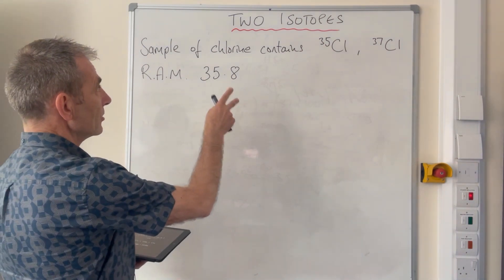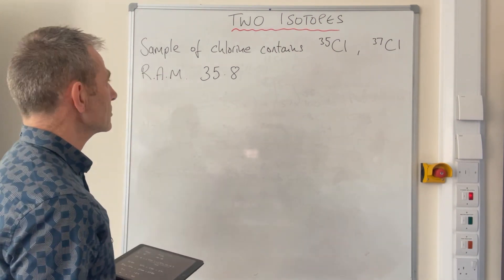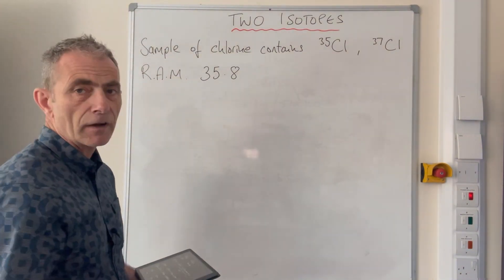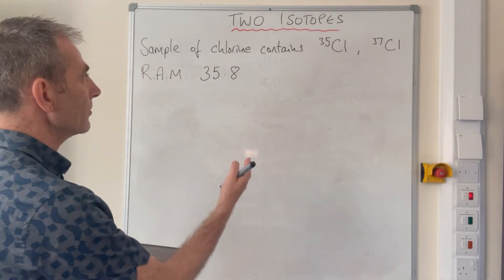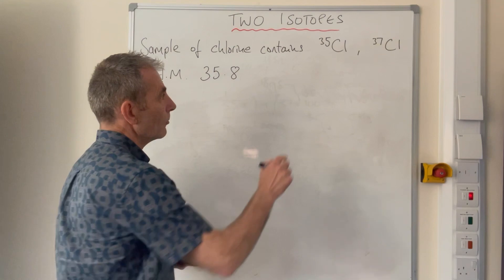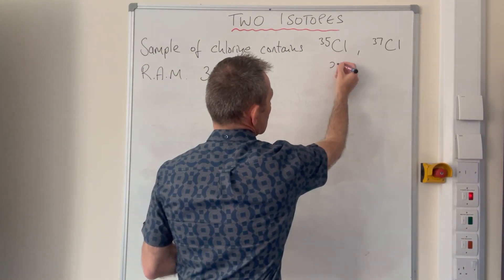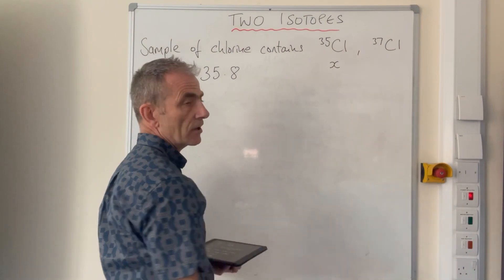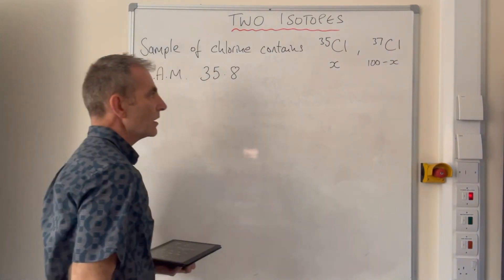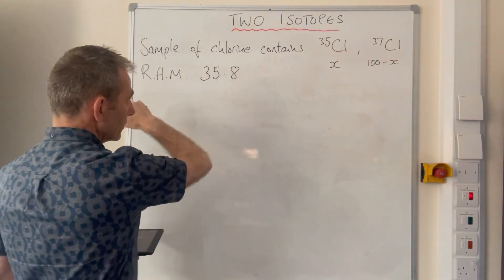We'll start with two isotopes. So we've got a sample of chlorine. It contains the standard chlorine-35 and chlorine-37 isotopes, but I've made the relative atomic mass slightly different to the norm. So normally it's 35.5, I've changed it to 35.8. So we've got to use that information to work out the percentage abundance of the two isotopes. The way we're going to do it is we're going to say one of the isotopes has a percentage abundance of x. So let's go for 35, so we'll say that that's x. So that means the percentage abundance of 37, remember percentages are out of 100, it's going to be 100 minus x.